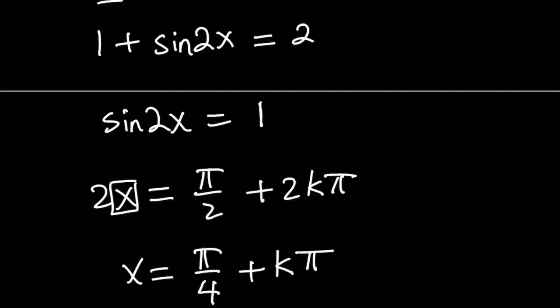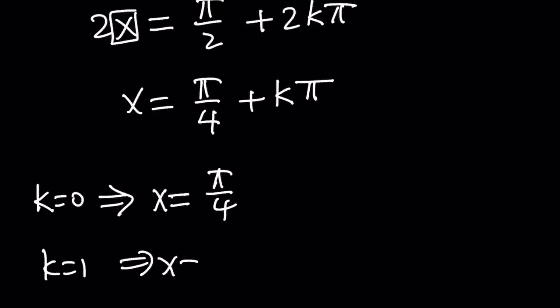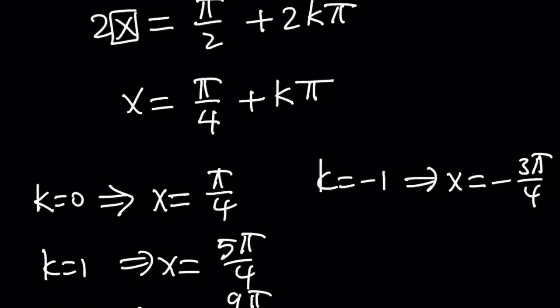Now k is an integer positive and negative so let's replace k with some values. If k is 0, x equals pi over 4. If k is 1, x equals 5 pi over 4. If k is 2 then x is 9 pi over 4. If k is negative 1 then x is negative 3 pi over 4 and so on and so forth. Let's use negative 2 as well. That's going to give us negative 7 pi over 4.